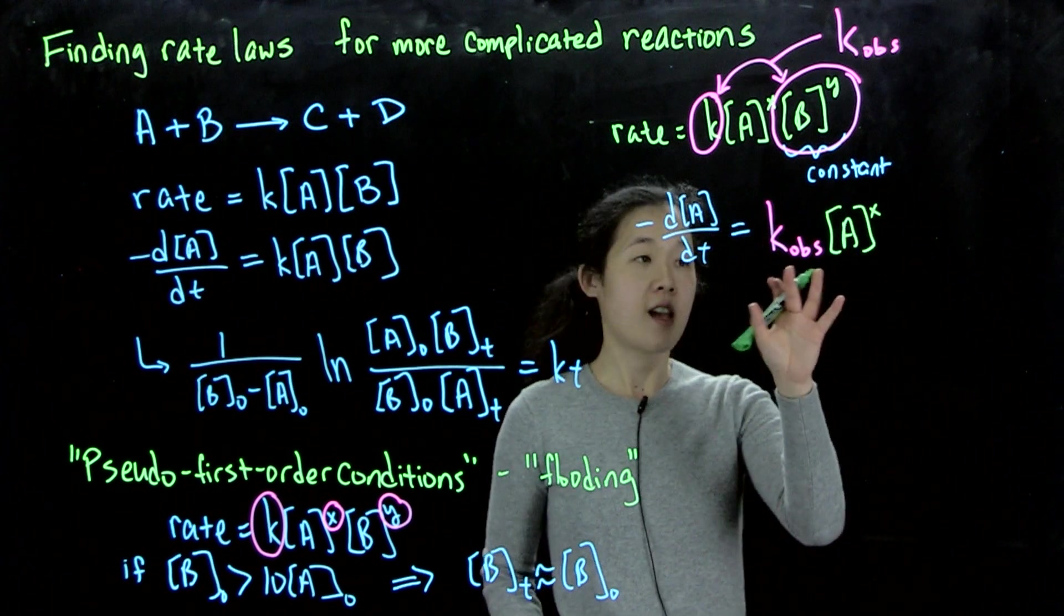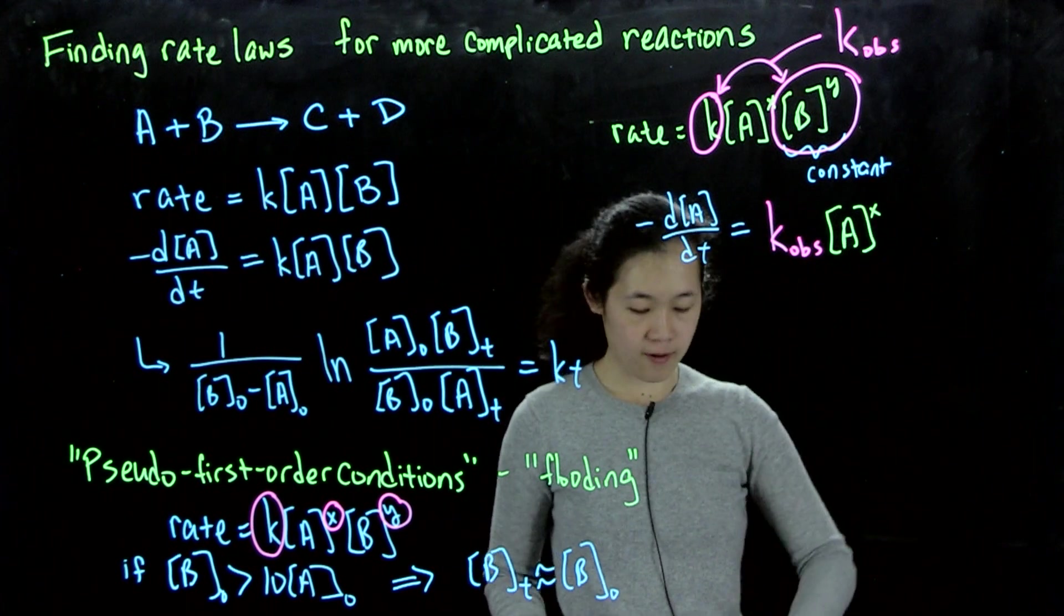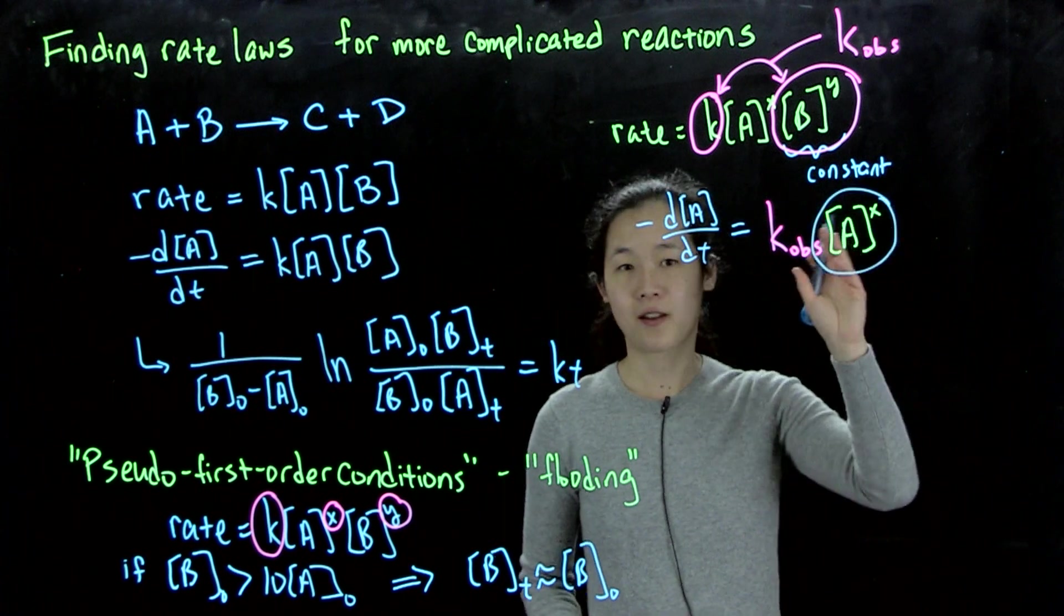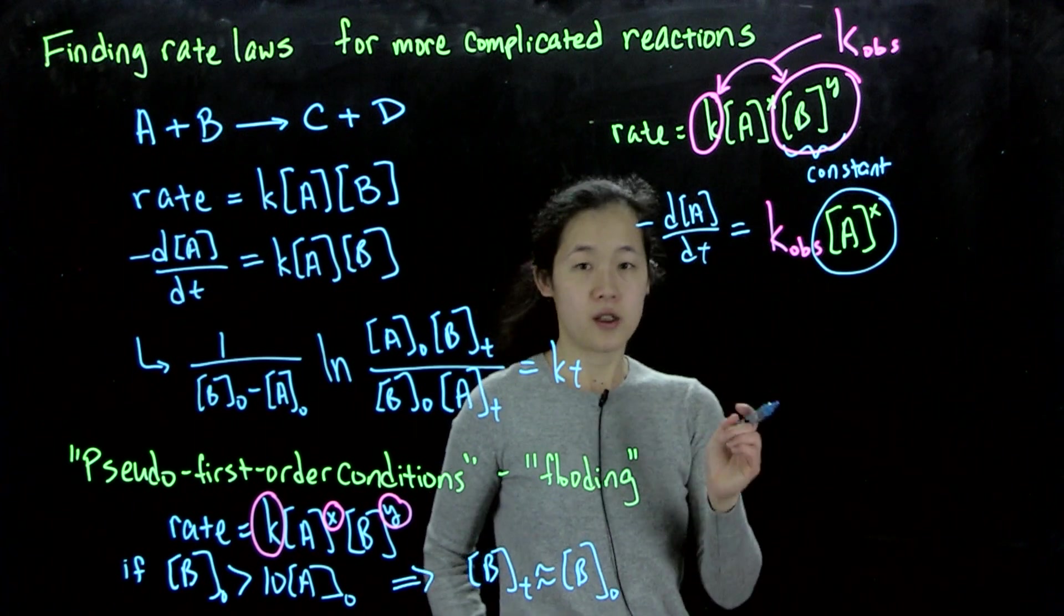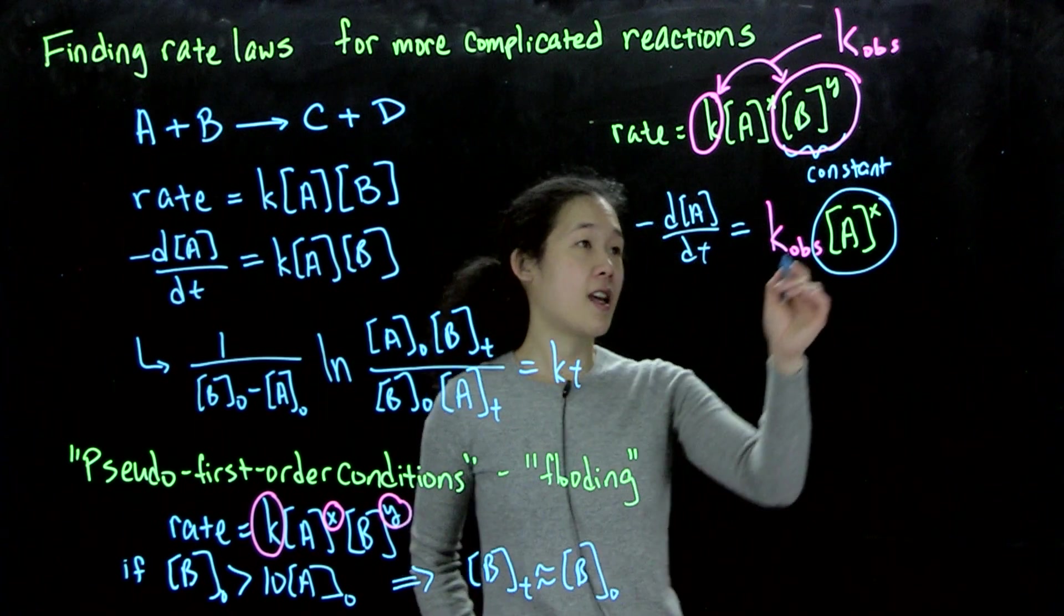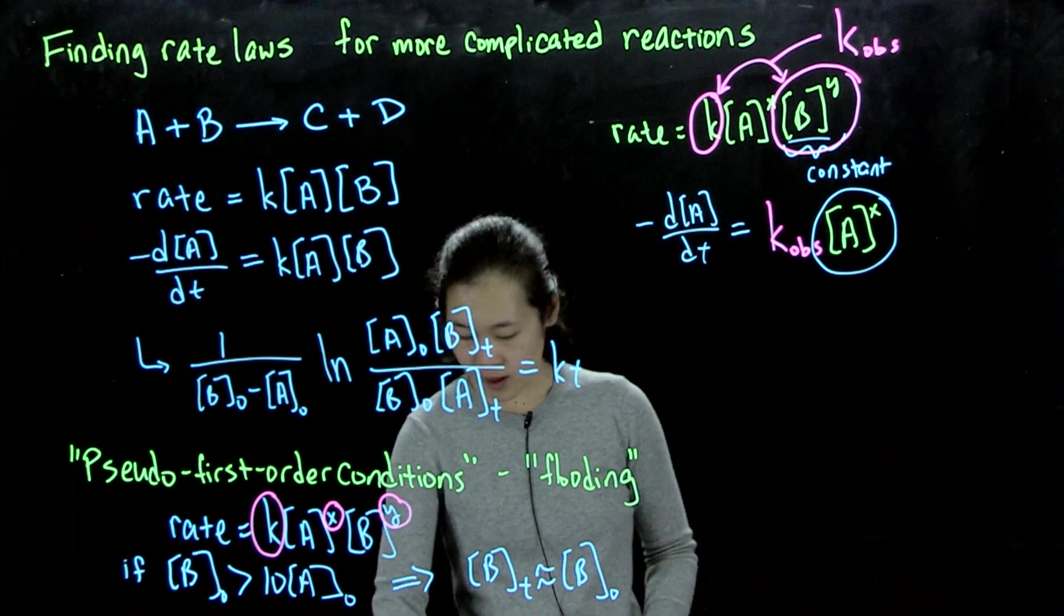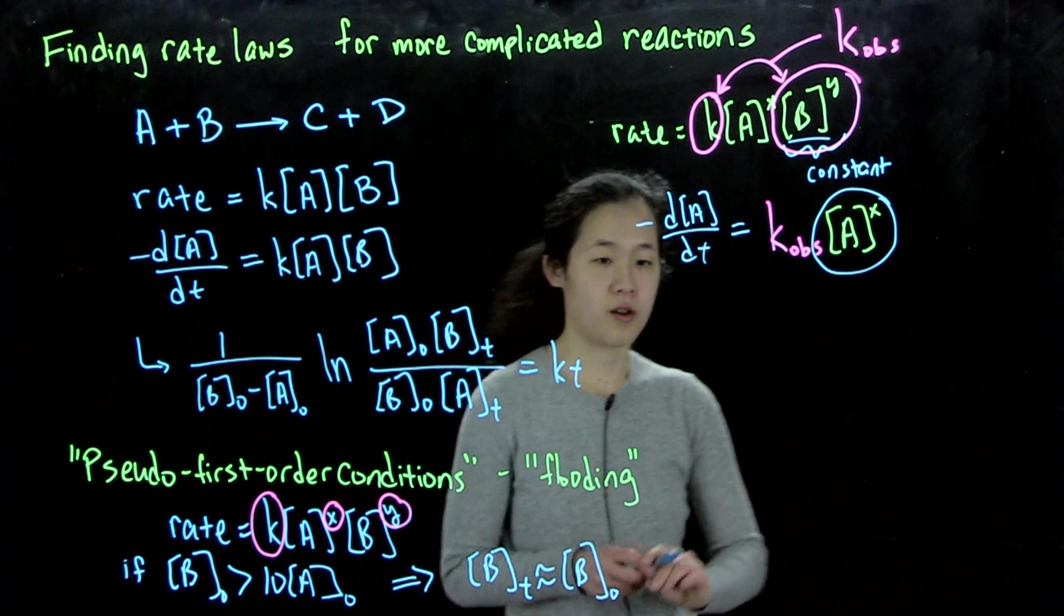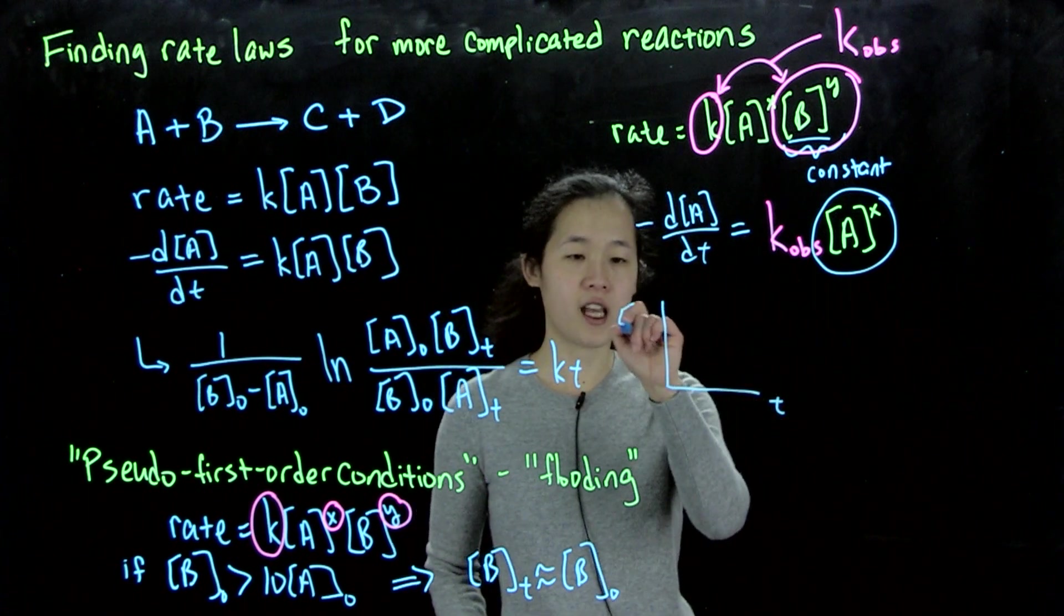So what this means is that now this is what's called pseudo-first-order conditions, because now we only have one dependence, which will be the concentration of A. So now we can solve this exactly in the way that we did it in the last lecture. So what we can do is now, because again B is constant or because it's so high, what we'll do is then we'll start plotting our data of just A versus T. So for example, here, if we're plotting A versus T, we have several different scenarios to solve for x.